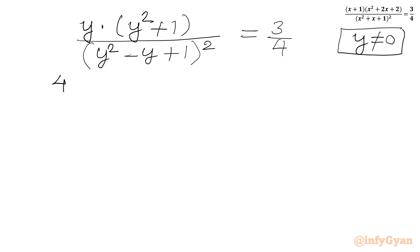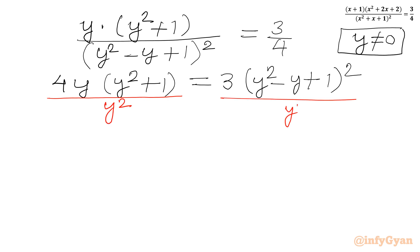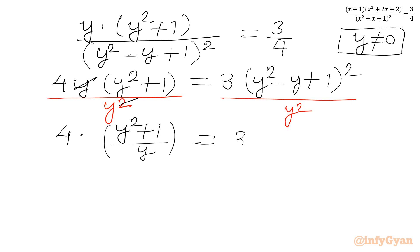Now I will cross multiply. So 4y times (y squared plus 1) will be equal to 3 times (y squared minus y plus 1) whole square. Now y is not equal to 0, so we can divide both sides by y squared. LHS we can write, once we cancel y with this power: 4 times (y squared plus 1) over y, equal to 3 times (y squared minus y plus 1) over y, and then whole square.